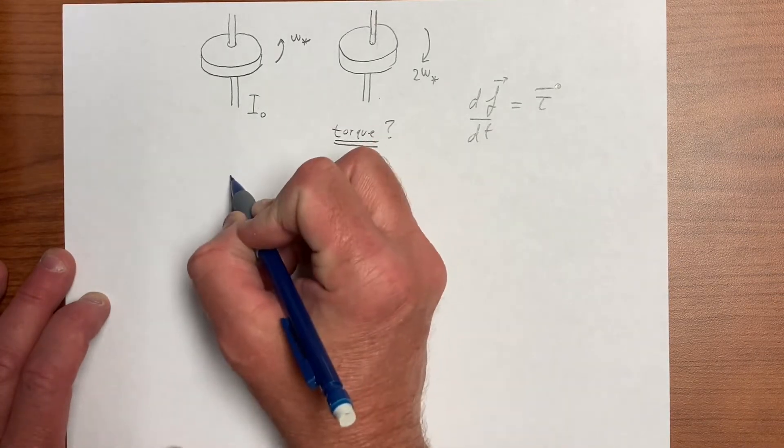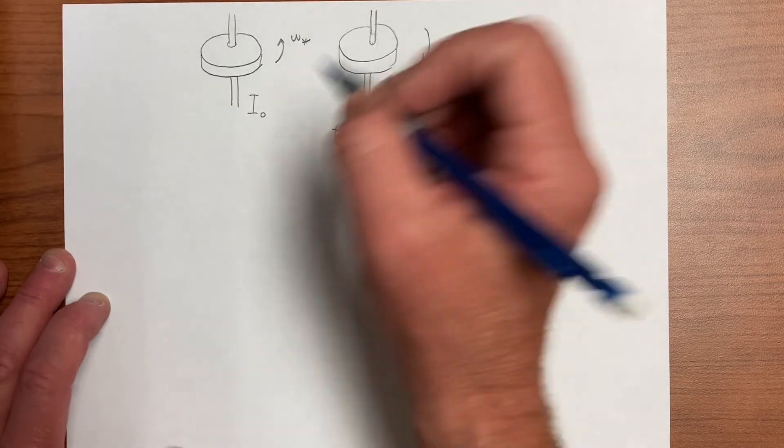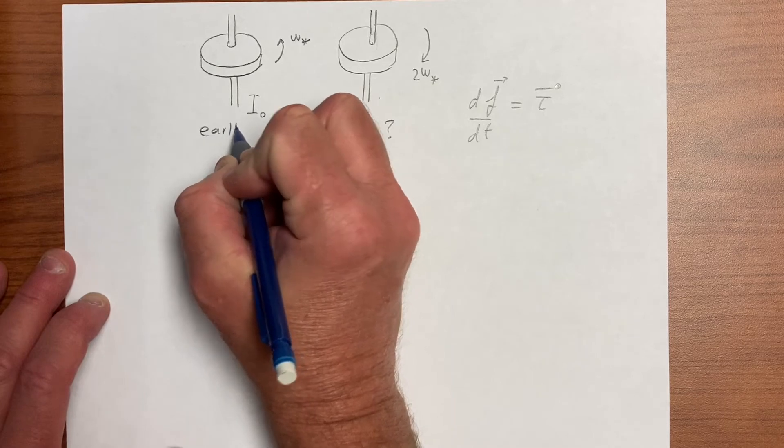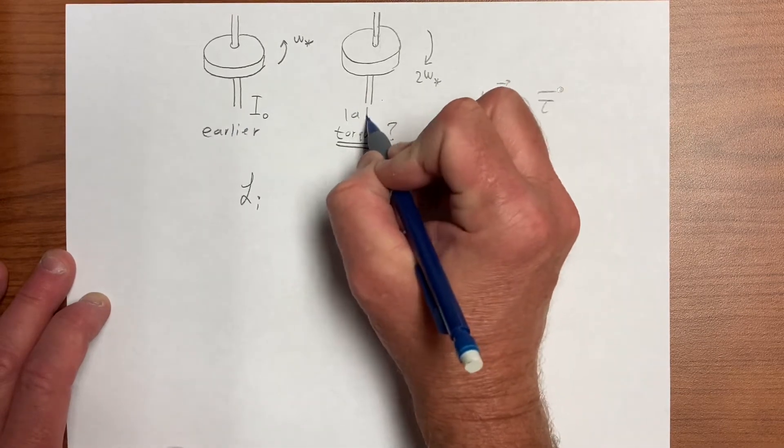So let's evaluate the angular momentum. There's only one disk here, so this is really an earlier and this is a later configuration.